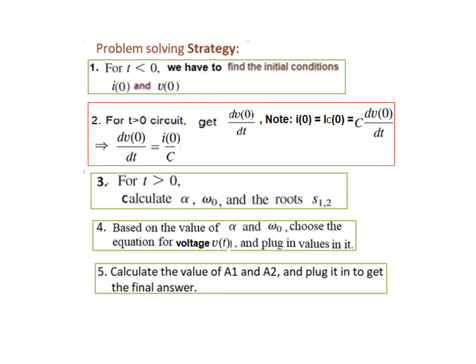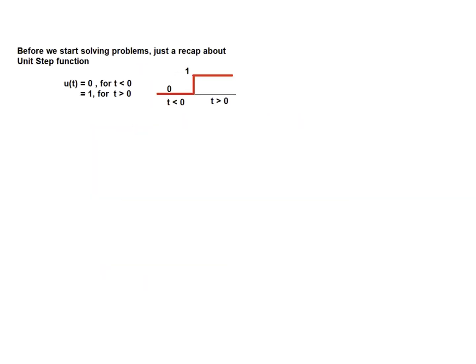The problem-solving strategy we have been following has five steps. We will go step by step in solving the problems. Now before we start, just a recap about the unit step function. It is represented as u(t), where u(t) is 0 for T less than 0, and u(t) is 1 for T greater than 0.